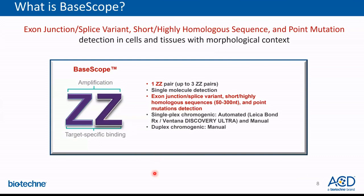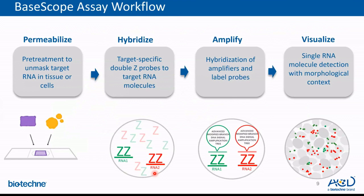BASCOPE can detect up to two targets simultaneously in one single tissue sample. The BASCOPE assay workflow is very similar to our RNAscope workflow. First, the cells or tissues bound to the slide are permeabilized using ACD's ready-to-use pre-treatment reagents. Then the target probes are hybridized to the target RNA. After probe hybridization, the target probes are hybridized with ACD's modified branch signal amplification tree consisting of amplifiers and label probes to provide high sensitivity. After colors are developed, the single RNA molecule signal can be seen as a red or green chromogen deposit using bright field microscopy, and slides can be scanned for further qualitative or quantitative analysis.